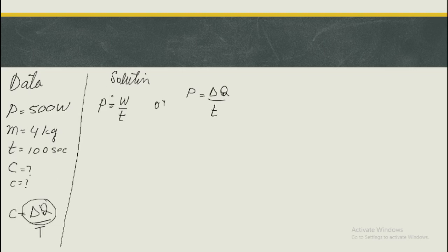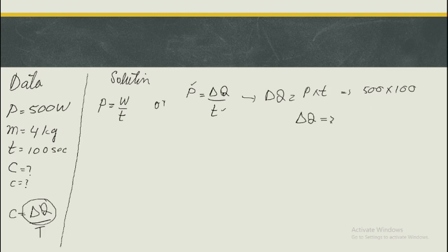ہمیں پتا ہے کہ power = delta q / t۔ چونکہ power اور time دونوں معلوم ہیں، تو equation rearrange کر کے: delta q = power × t = 500 × 100 = 50,000 joules۔ یہ total heat energy ہمارے پاس آگئی۔